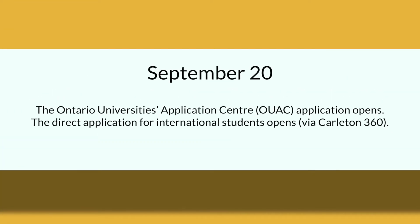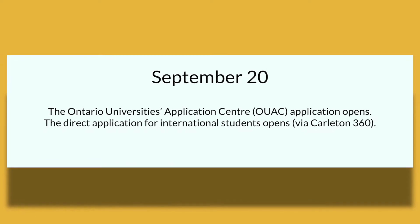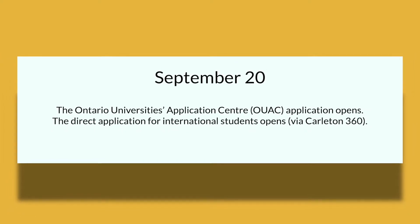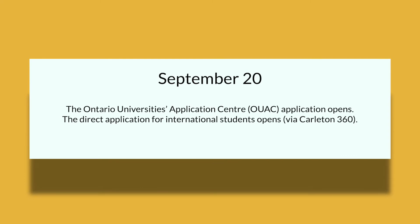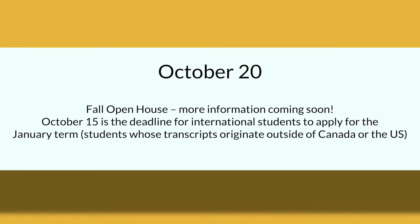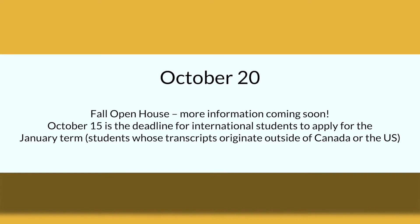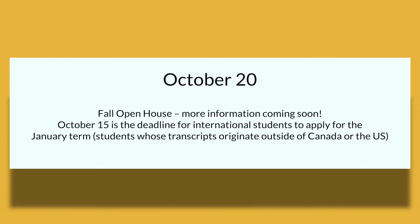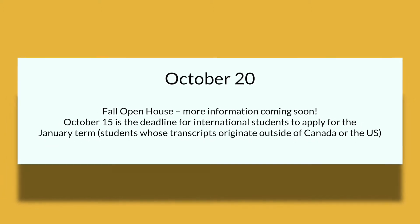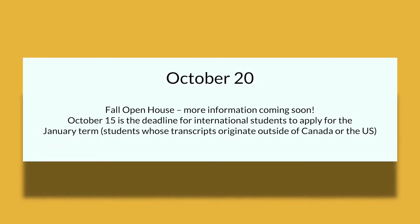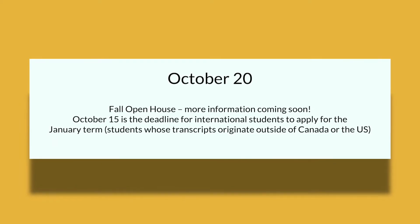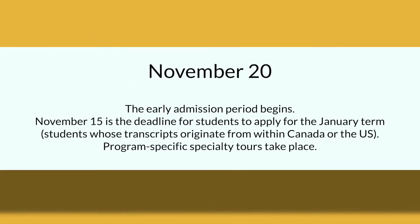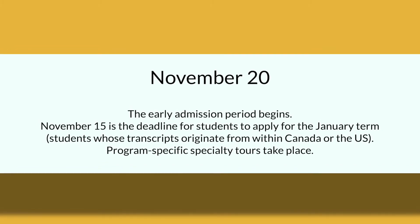Here are some of the deadlines you can expect for the Carleton admission process. On September 20th, the Ontario University's Application Center application opens, and the direct application for international students opens via Carleton 360. October 20th, the fall open house is happening. October 15th is the deadline for international students to apply for the January term — students whose transcripts originate from outside Canada and the US fit into this category. November 20th is the early admission period beginning.